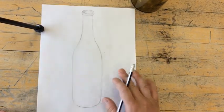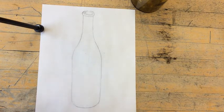If you want to put a little cast shadow on your bottle here you can, just don't shade.